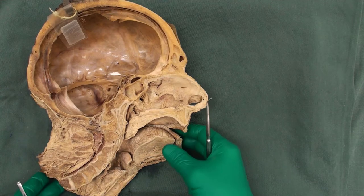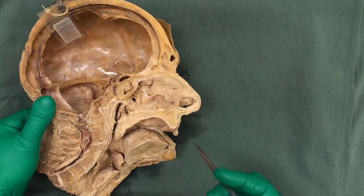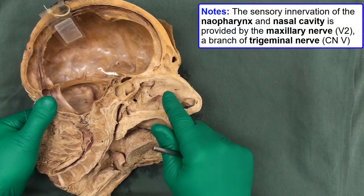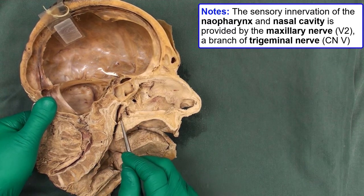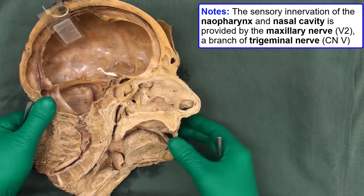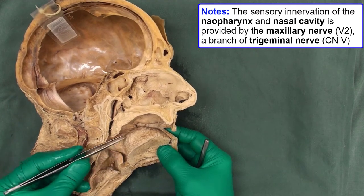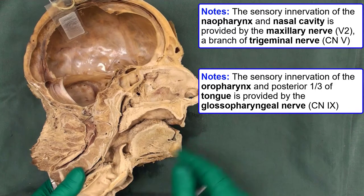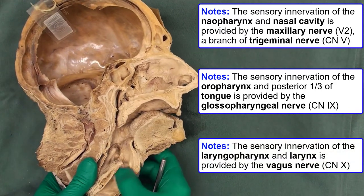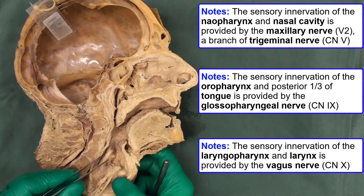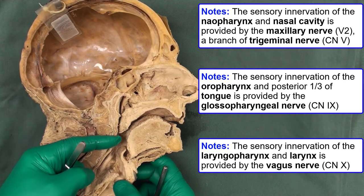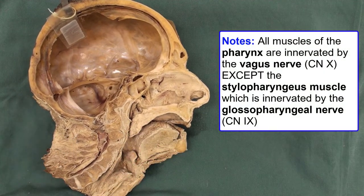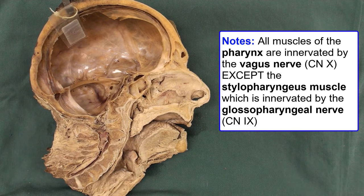Regarding innervation of the pharynx: since the nasopharynx is anterior to the nasal cavity, it is innervated by V2, the maxillary branch of the trigeminal nerve. The oropharynx is innervated by cranial nerve 9, consistent with the posterior one-third of the tongue being supplied by CN9. The laryngopharynx is innervated by cranial nerve 10, the vagus nerve. For muscle innervation, all muscles of the pharynx are supplied by cranial nerve 10, except the stylopharyngeus, which is supplied by cranial nerve 9.